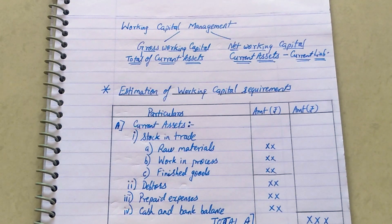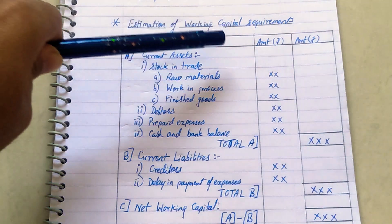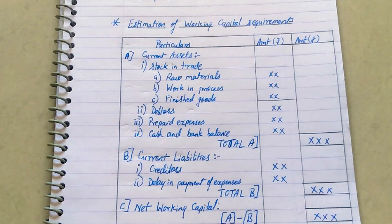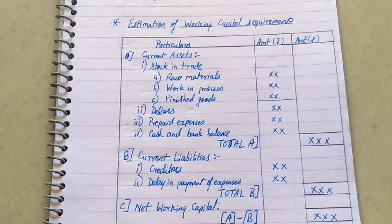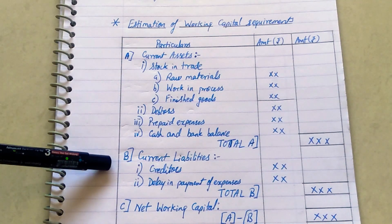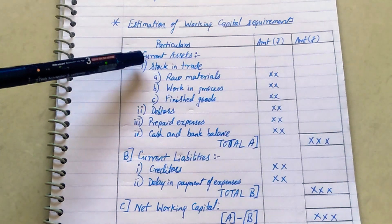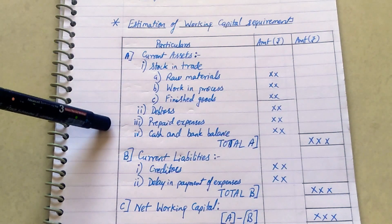This is the format for estimation of working capital requirement — also called a working capital budget. If you look at it, there are three columns: particulars and two columns for amount, an inner column and an outer column. The whole statement can be classified into two parts: Part A and Part B. Part A consists of the calculation of all your current assets for the upcoming year.